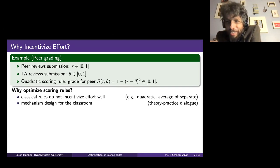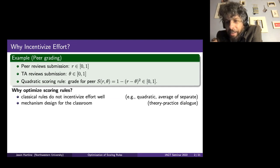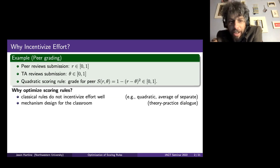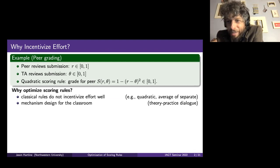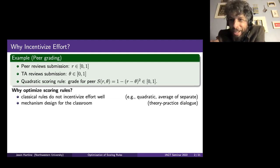In the last five years, in part due to my interest in peer grading, I've been very interested in incentives in the classroom. I think it's a fantastic opportunity for people interested in algorithmic game theory to apply ideas like mechanism design. One reason it's such a great opportunity is that, unlike many industry-leading applications, you really do get an opportunity to design these mechanisms pretty much every time you teach your class. You can change the rules and try to figure out what makes the incentives better.